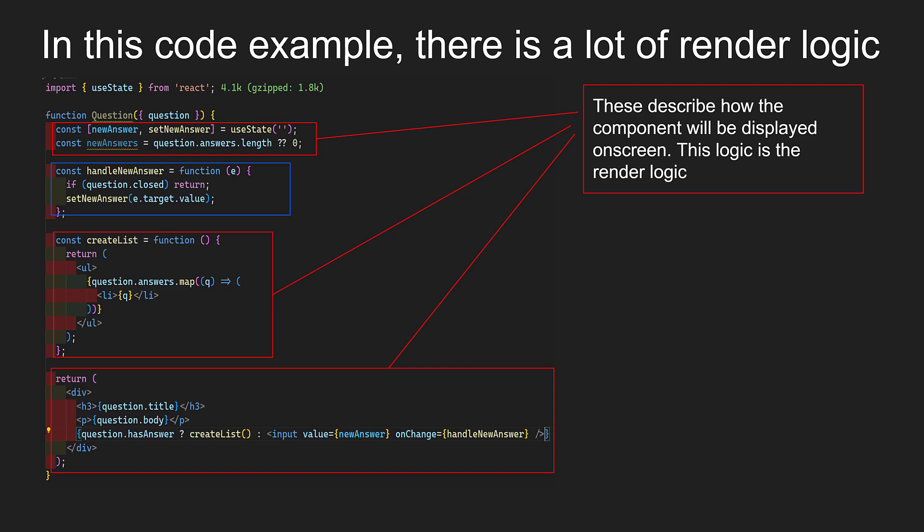Render logic is basically all the code that lives at the top level of your component functions and participates in describing how the view of a certain component instance should look like. Render logic means writing JSX syntax and things related to the view. In the code example, you can see state data, the create list, and the complete JSX code being written — these describe how the component will be displayed on the screen. This logic is called render logic.